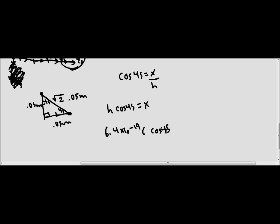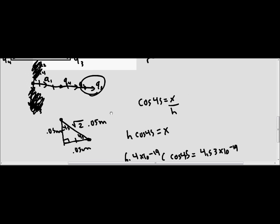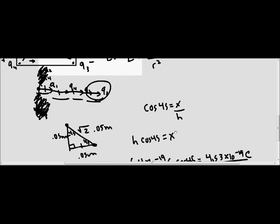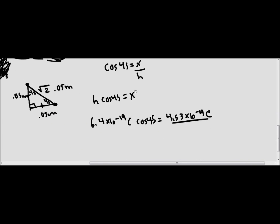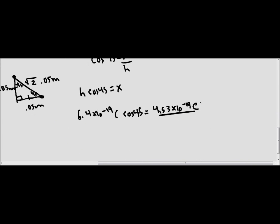So to substitute those in, we've got 6.4 times 10 to the negative 19 coulombs times cosine of 45. And if you were to multiply those together, you would get 4.53 times 10 to the negative 19 coulombs. So in order to find the total force in the x direction, we're going to just take this and multiply it by 4. And that gives us 1.81 times 10 to the negative 18 coulombs.